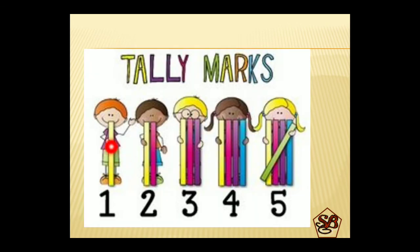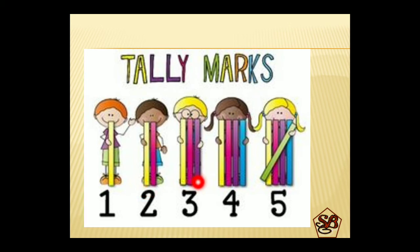Tally marks are the vertical lines which we use to represent numbers when we collect data. One line represents 1, two lines represent 2, three vertical lines represent 3, four vertical lines represent 4, and four vertical lines with one slanting line represents 5. Representing 5 in this manner makes our counting easier.